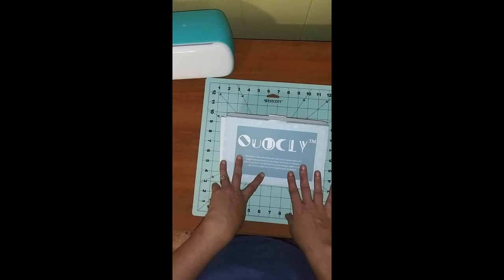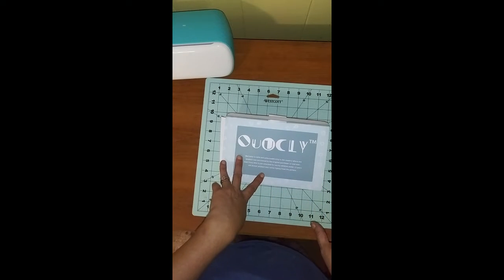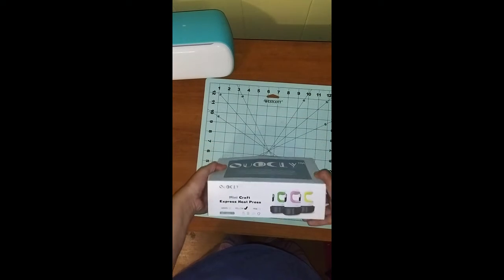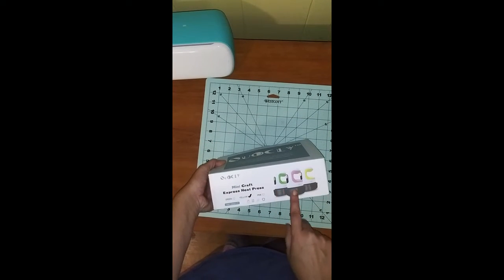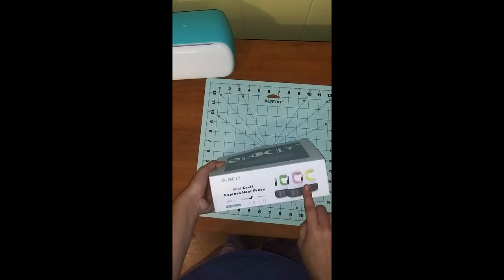This is just an unboxing and first initial impression of the Quickly mini press. They come in green, pink, and yellow. I have the yellow one.